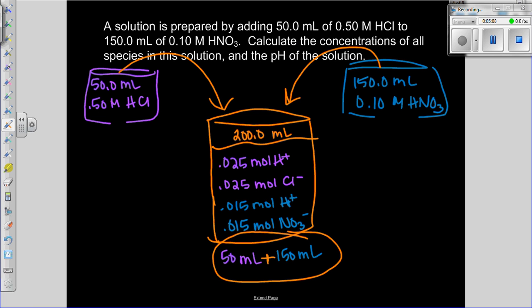Now I want to calculate the concentrations of all the species in the solution. Let's start with chloride ion. If I want concentration I do 0.025 moles divided by 0.2 liters. That gives us 0.125, but with two sig figs that's 0.13 molar chloride ion.